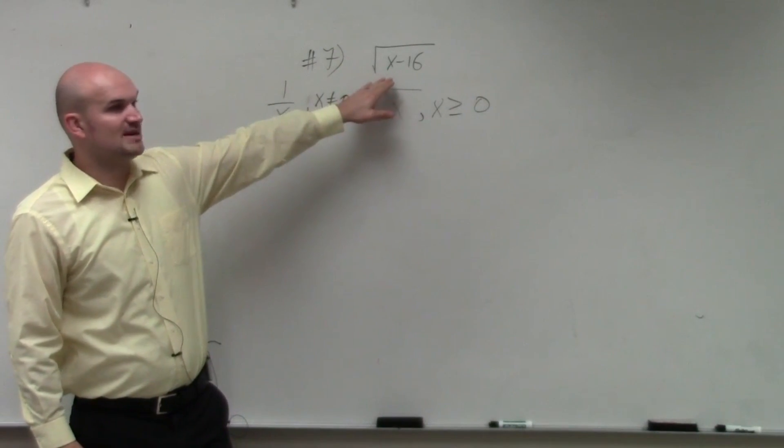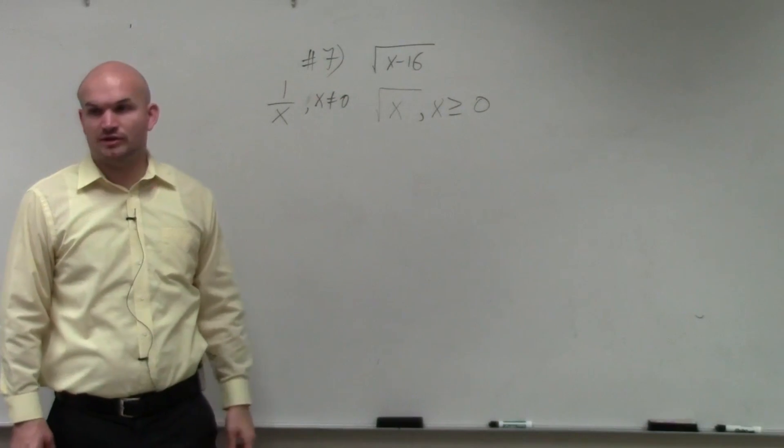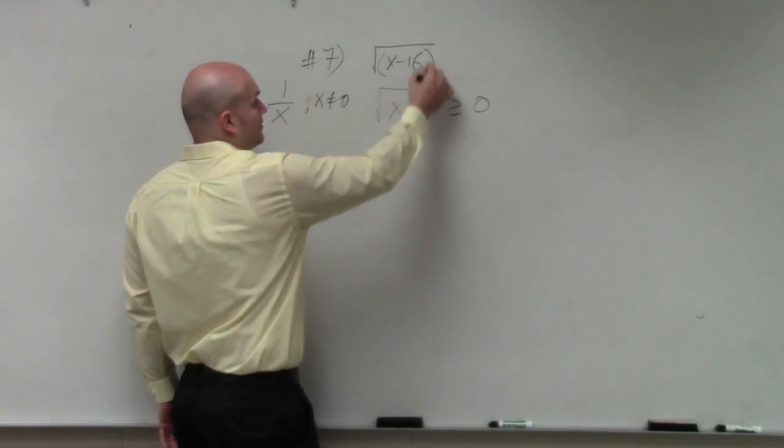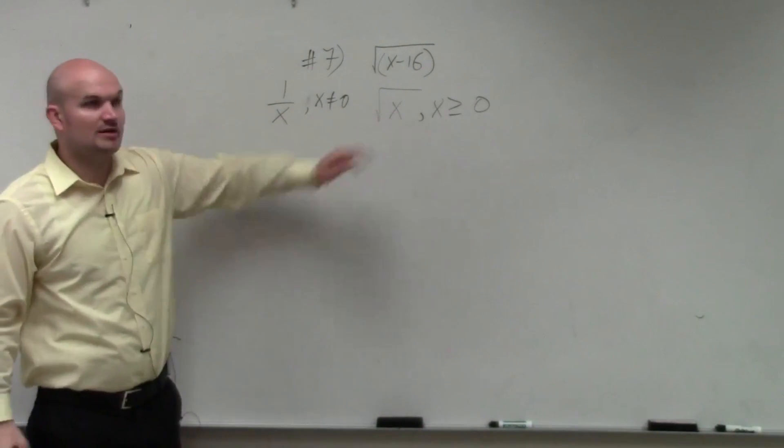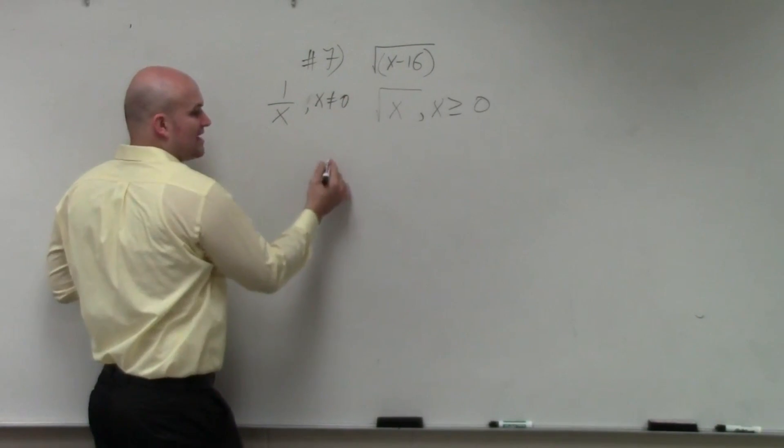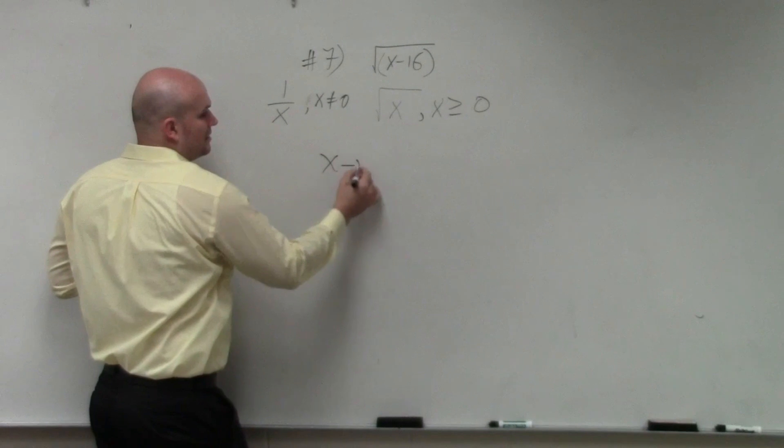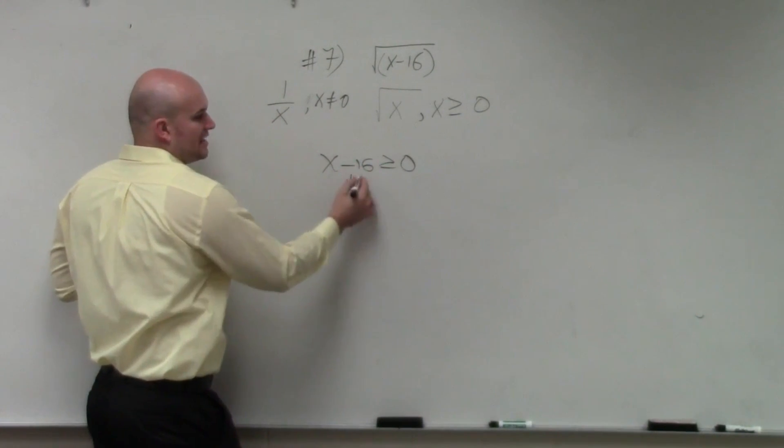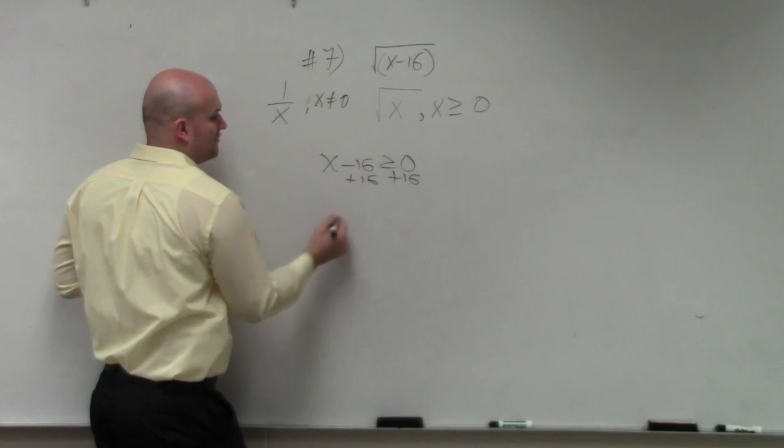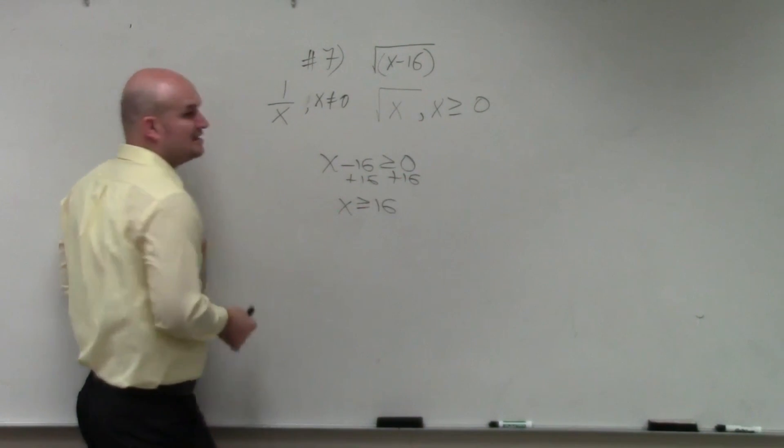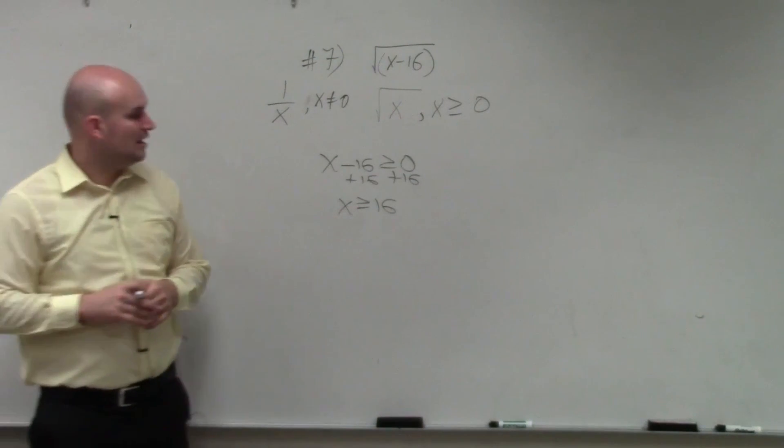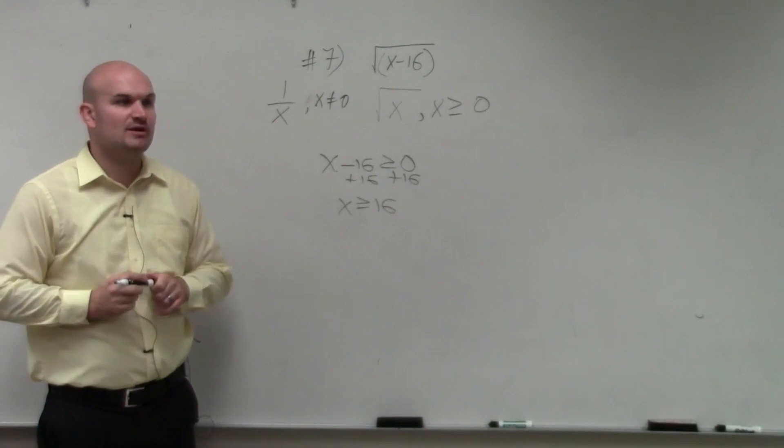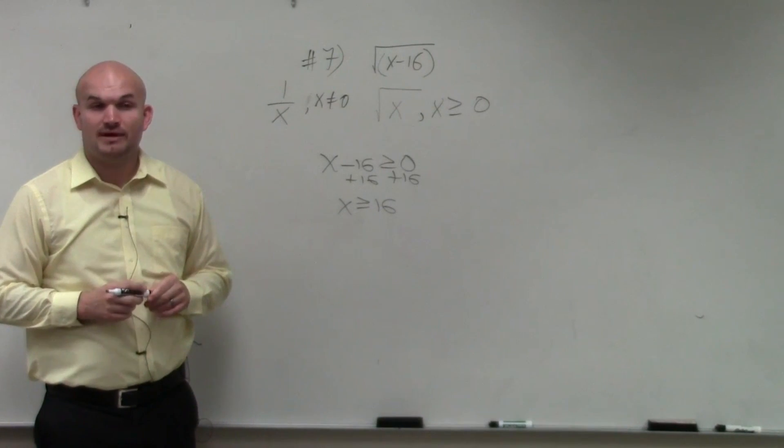So does my square root of x minus 16 fall into one of those restrictions? Yes. We know that that needs to be greater or equal to 0. So all I do is take my radicand expression and I set it greater or equal to 0. So then I solve for x to find the values of x that will satisfy this expression. And what we see is x has to be greater or equal to 16.